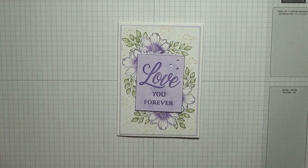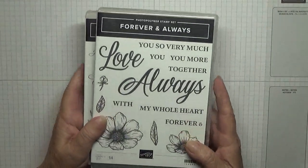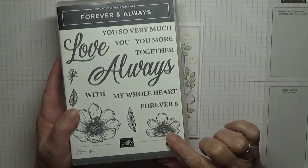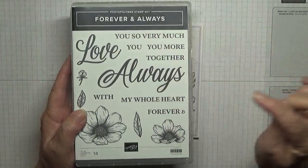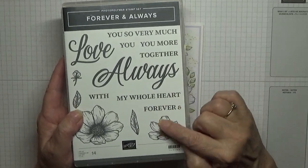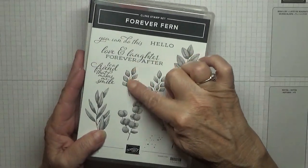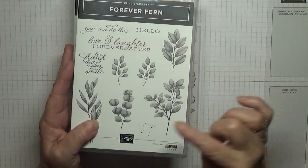To make this card I've used the stamp sets Forever and Always. I'm using the small flower Love You Forever, and I'm also using Forever Fern. I'm just going to be using that small stamp set and the dots.